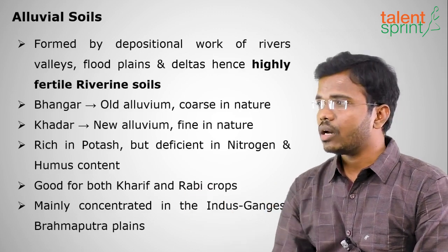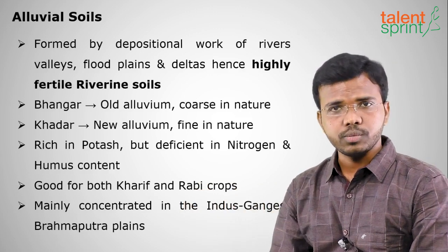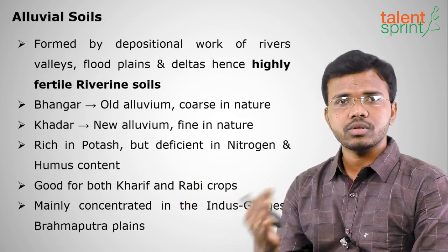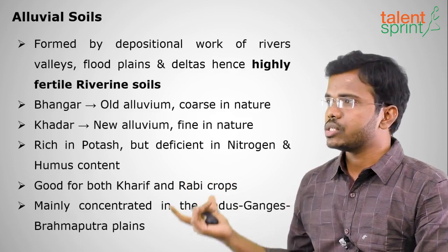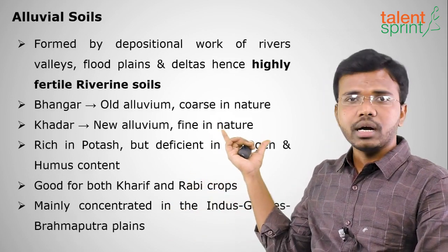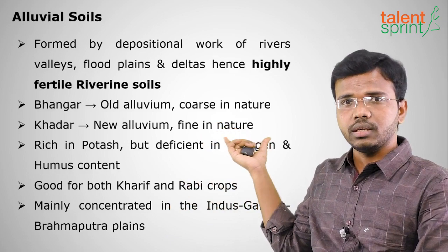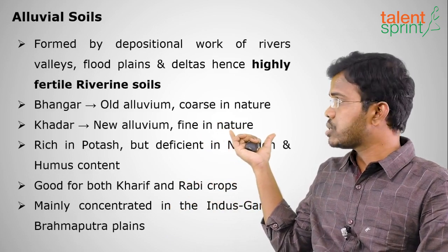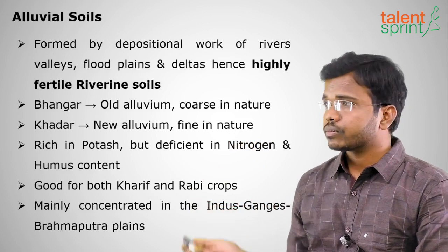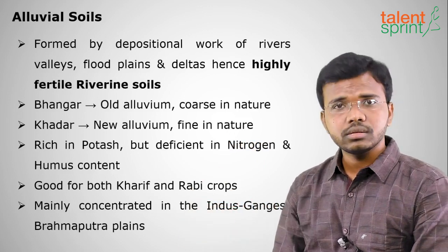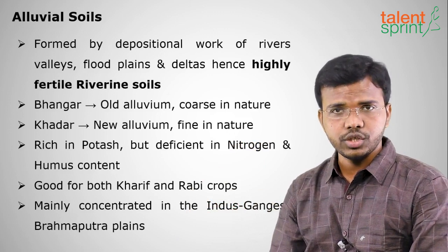Alluvial soils are good for both Kharif as well as Rabi crops — both for southwest monsoon as well as northeast monsoon crops. They are mainly found in the Indus-Ganges plains and have two types: Bangar, which is older alluvium with coarser particles, and Khadar, which is newer alluvium with finer particles and is more fertile in nature.